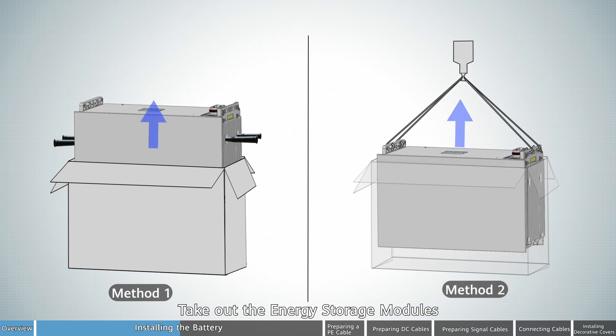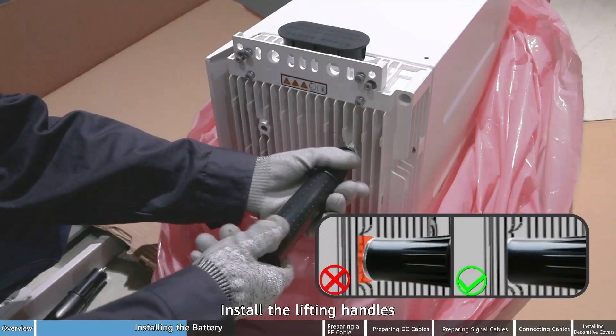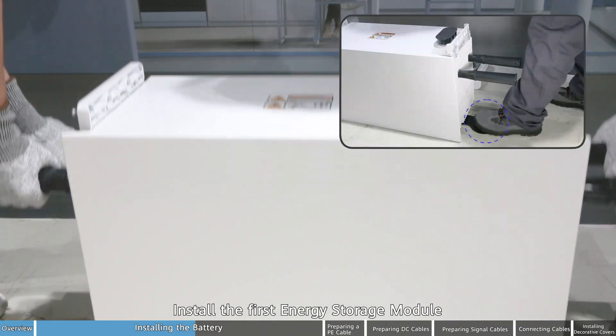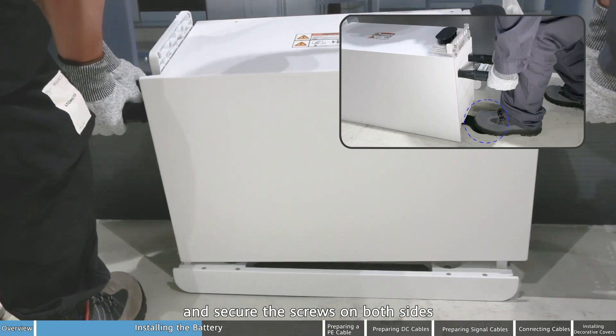Take out the energy storage modules. Install the lifting handles. Install the first energy storage module and secure the screws on both sides.